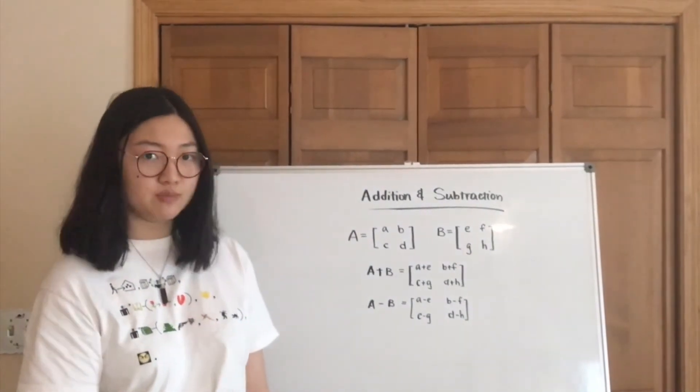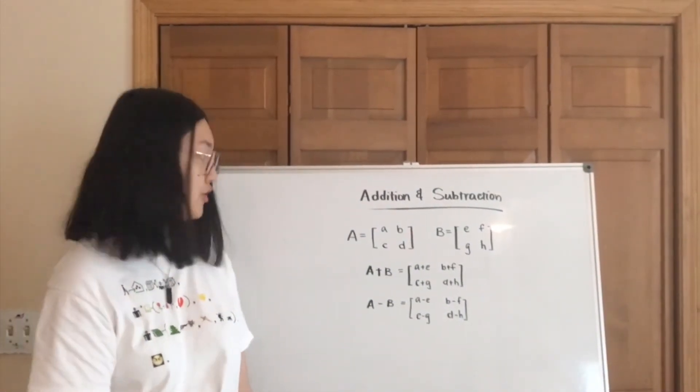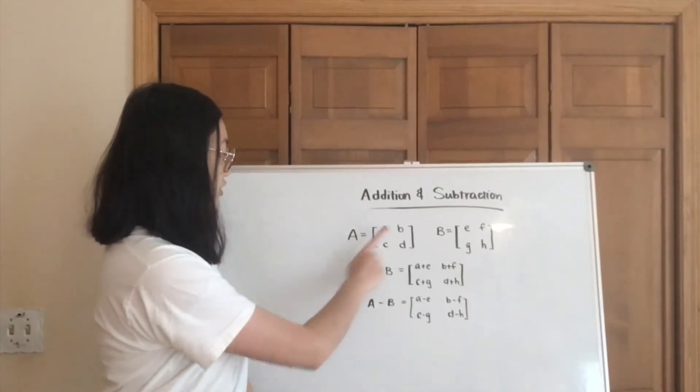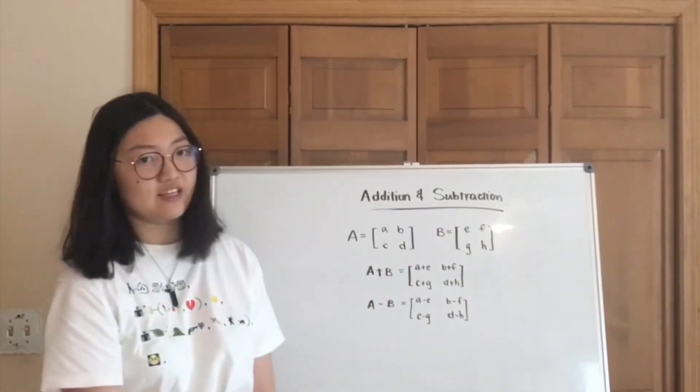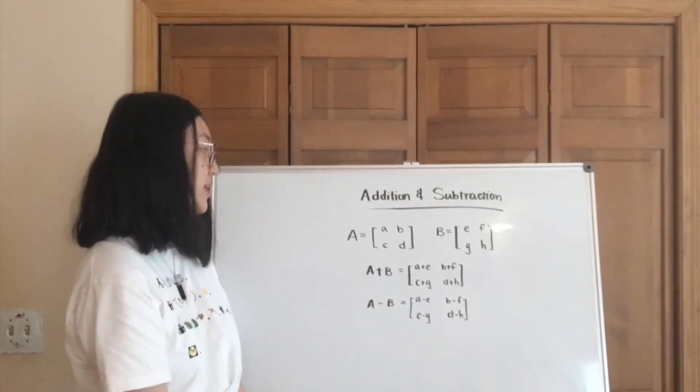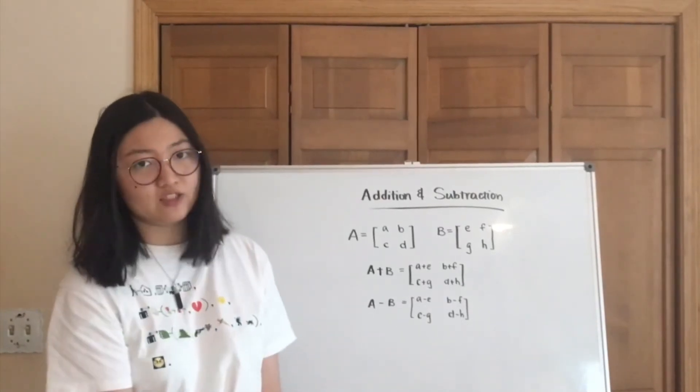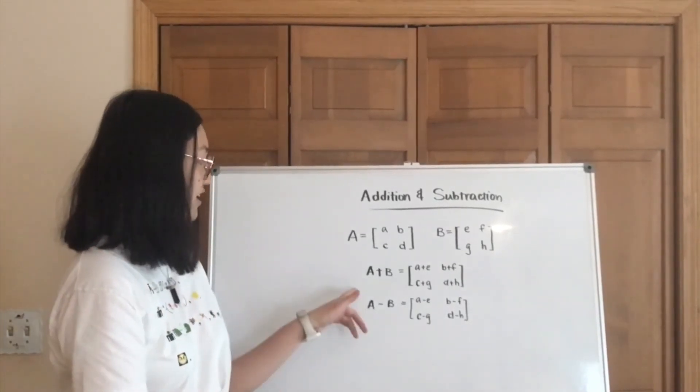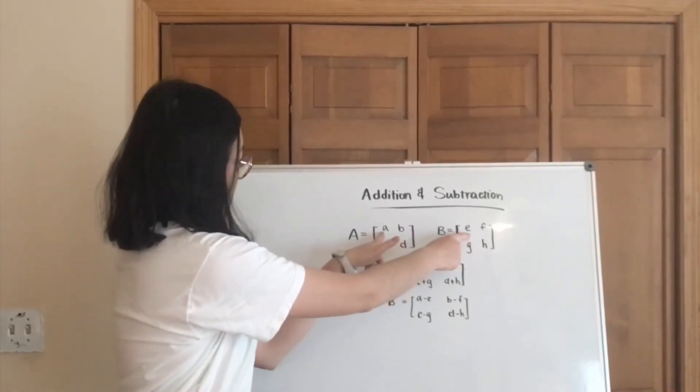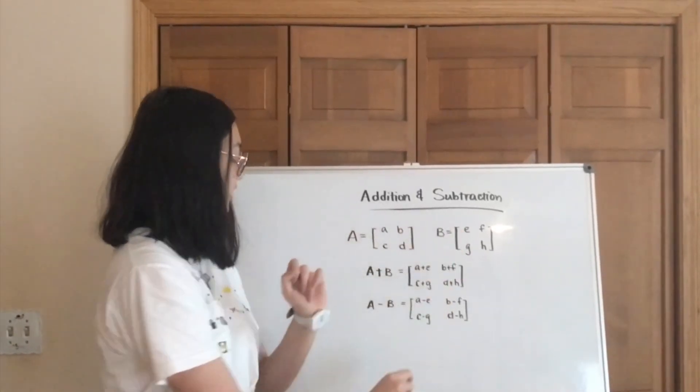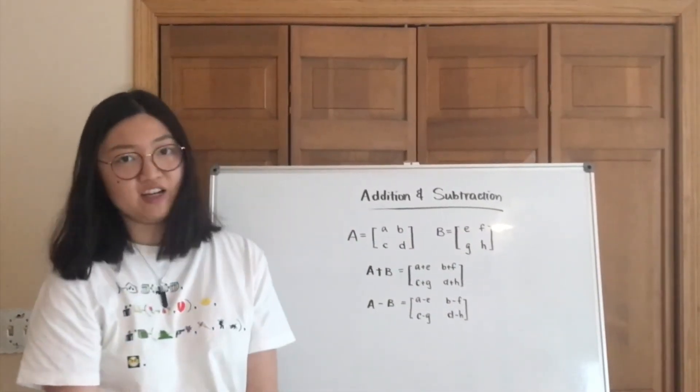So the addition and subtraction process for matrices are fairly straightforward. If you have two matrices that are of the exact same dimensions, in this case both of them are 2 by 2 matrices, you can just add the two numbers in the same location together, and then the same thing for subtraction.